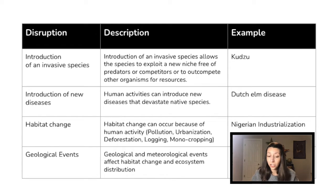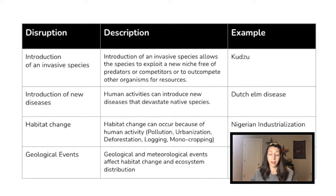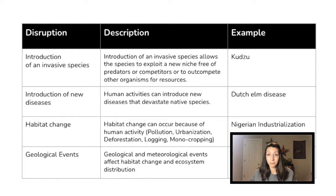Our first disruption is the introduction of an invasive species. The description is that the introduction of an invasive species allows the species to exploit a new niche free of predators or competitors to outcompete other organisms for resources. My example here is kudzu — a super invasive vine that's really overtaken the southeastern United States. It was first introduced in the 1800s as an ornamental and later introduced even more to prevent erosion, but it can grow super fast and definitely outcompetes a lot of other native plant species. This eventually leads to kudzu becoming very successful and overtaking native organisms, causing a loss of biodiversity.